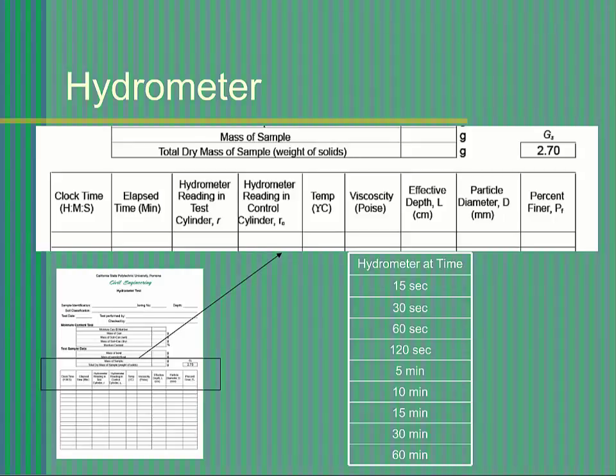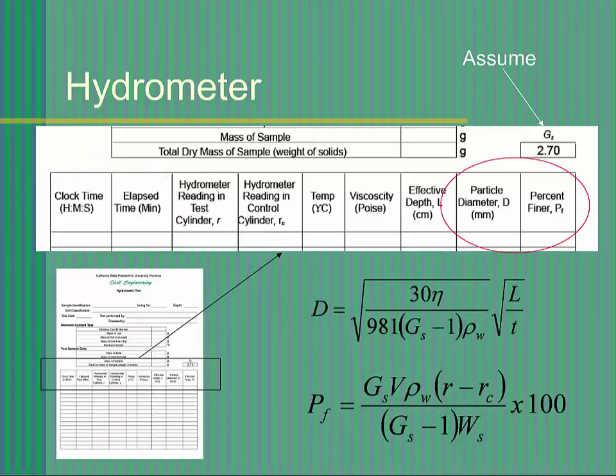Follow the lab manual for the necessary time intervals. Record the clock to the nearest second because some readings need to be made within seconds of placing the test cylinder on the table. Check with your instructor to determine if it will be necessary for you to take additional measurements after 60 minutes. For each reading, you will need to compute the diameter of the soil particles that have settled to the bottom and the percent finer.